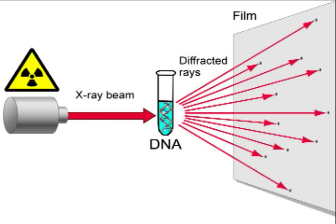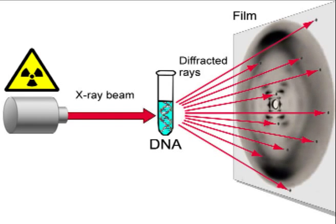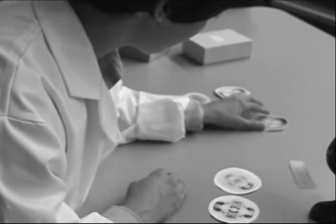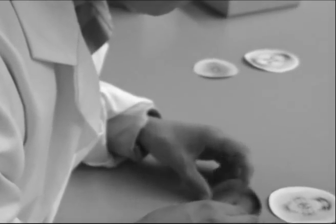When the X-rays hit the DNA, they diffract into a pattern. From the pattern, the molecule shape can be determined. Franklin generated X-rays and aimed them at the DNA. Then, the X-rays diffracted and landed on photographic paper.